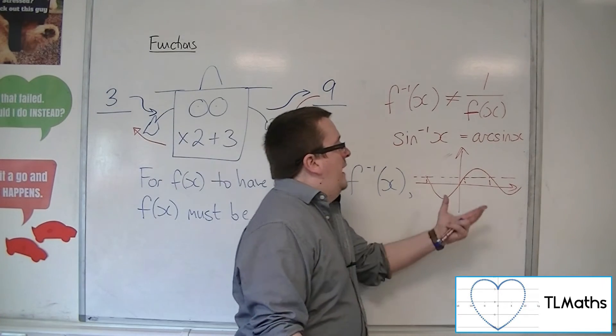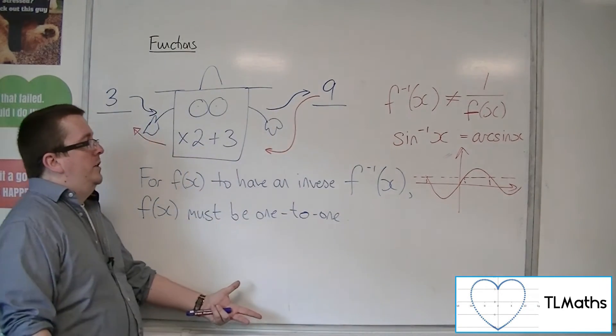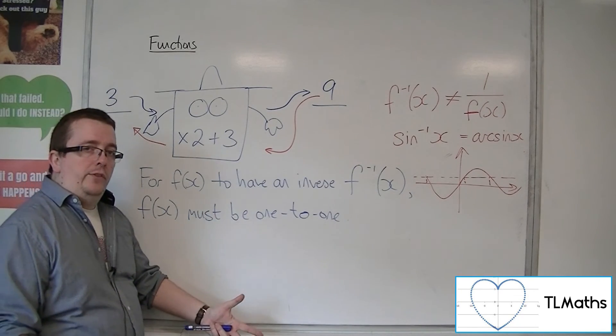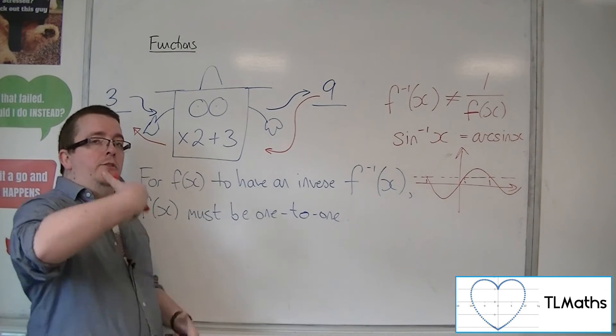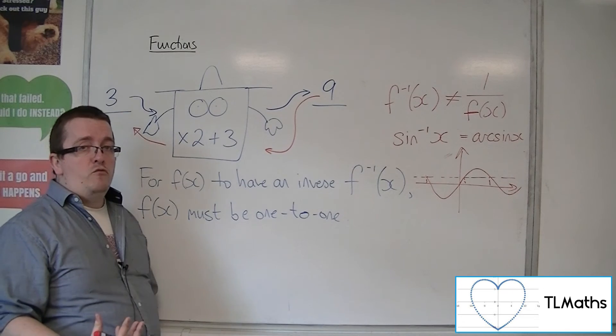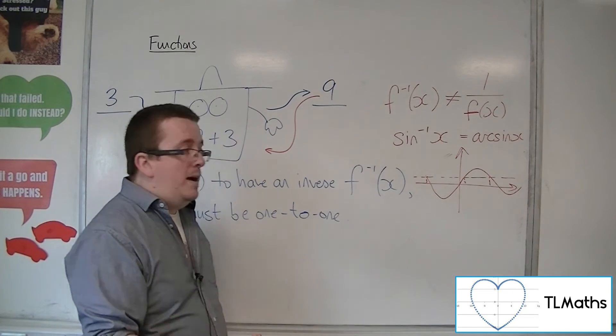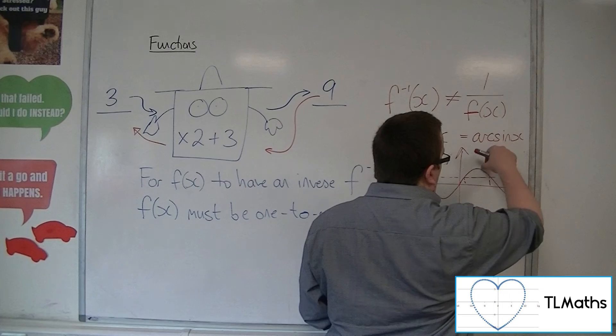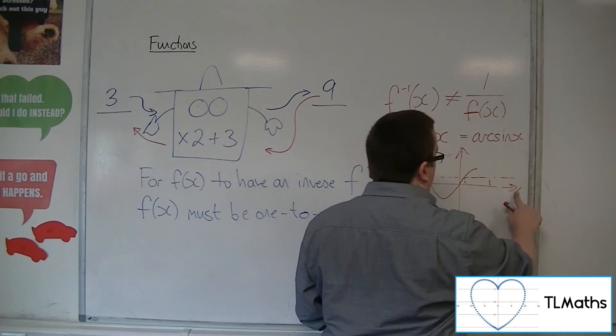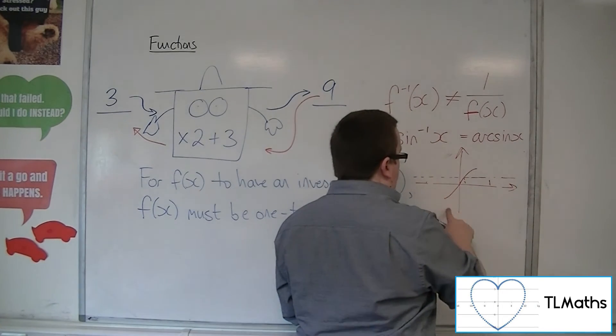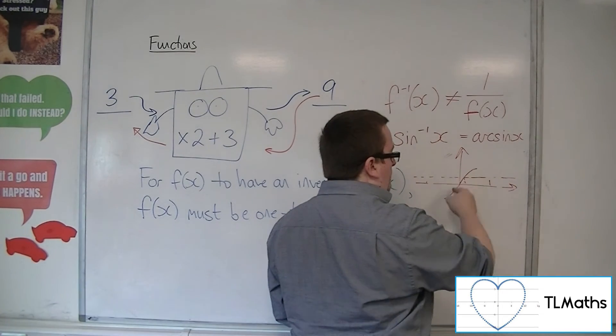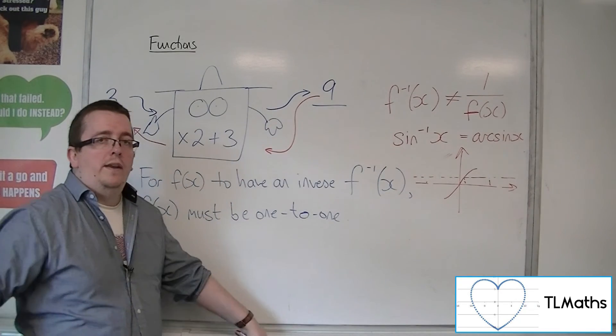And, in order to find inverse functions, we have to make functions that perhaps weren't 1 to 1 originally, 1 to 1, by restricting the domain, by saying to ourselves, right, well, if I cut the curve there, and there, I now have a piece of graph which is 1 to 1.